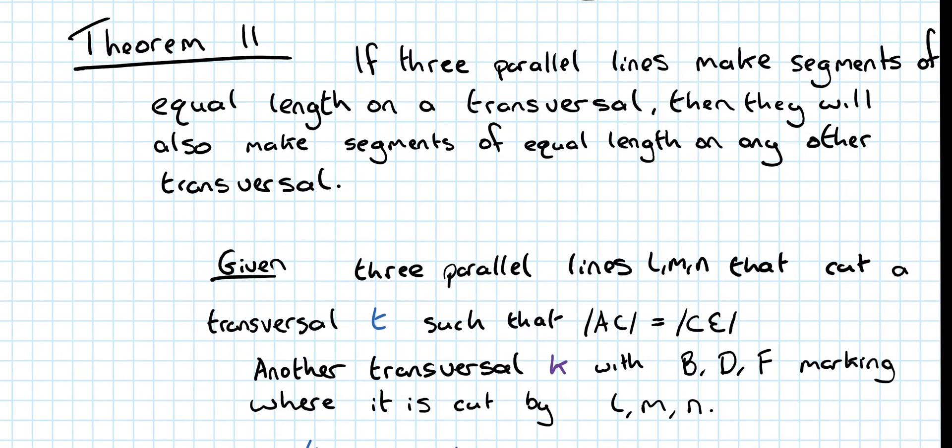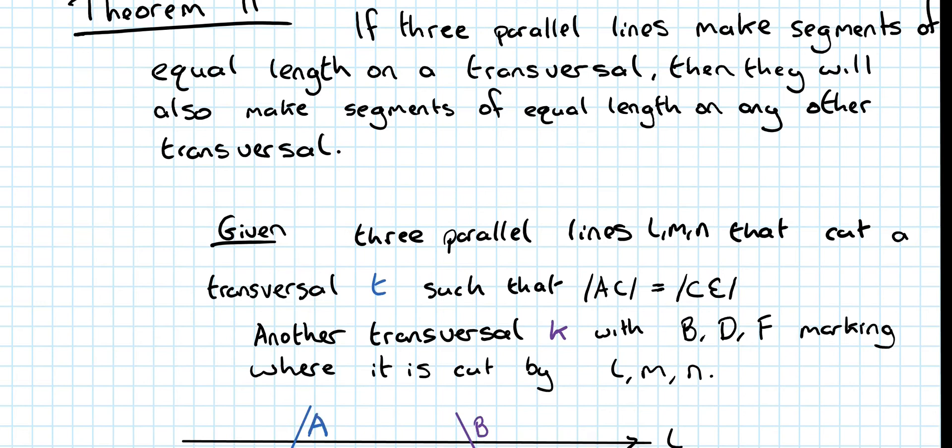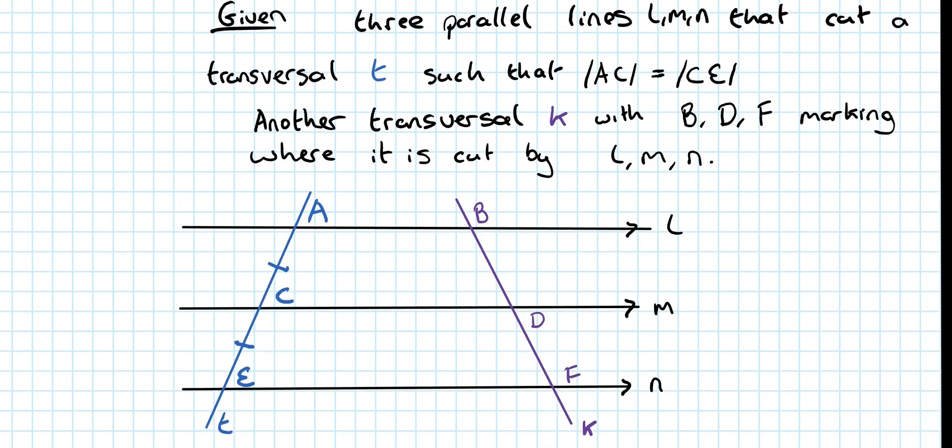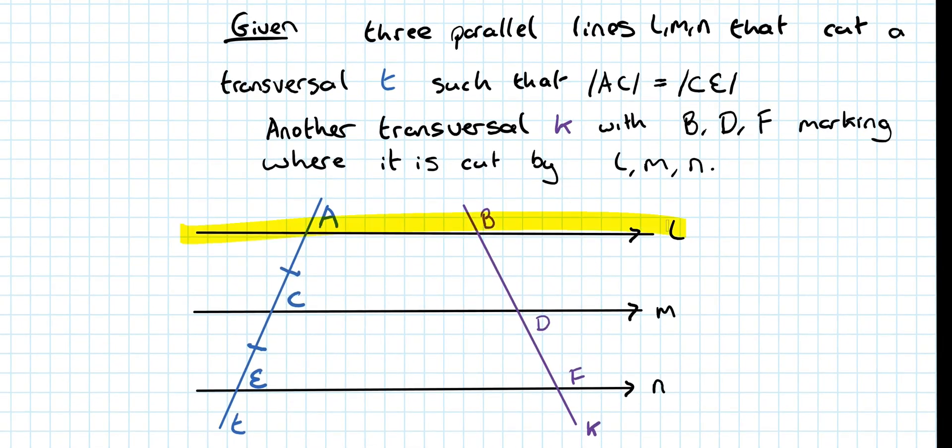Okay, so what you'll be given in the question is here. You'll be given three parallel lines, L, M, and N, that cut a transversal. Now, the transversals, the lines might have different names. I've called them L, M, and N. The transversal might have a different name. It might not be called T, such that the length AC is equal to CE. Now, what this looks like, you'll be given something like this. Three parallel lines, L, M, and N. And a transversal.